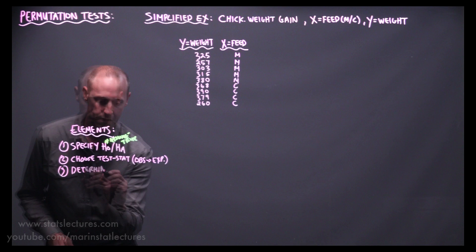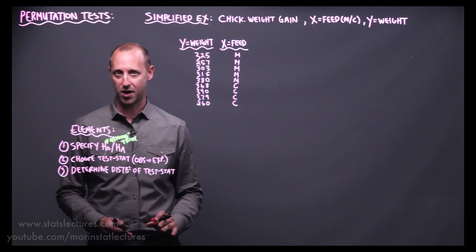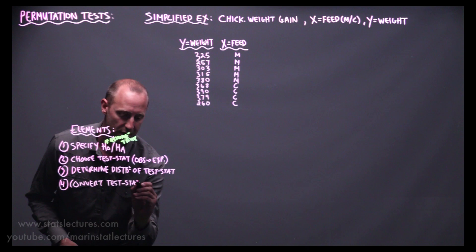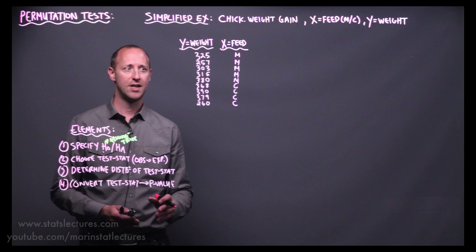The third element is we determine the distribution of the test statistic under the null — if the null hypothesis is true, what's the distribution of all the test statistics we could end up with? The fourth is that we convert our test statistic into a p-value, which generally tells us the probability of observing what we did in our sample, or something even more extreme, if the null hypothesis were true.